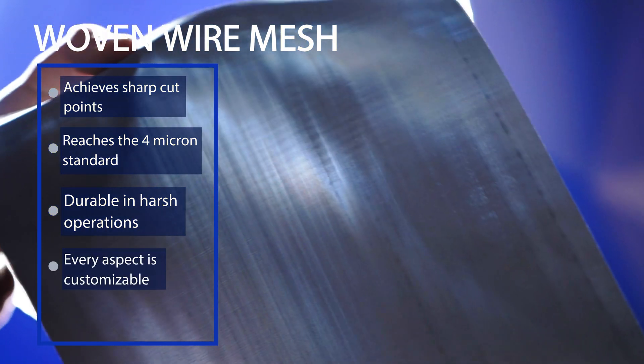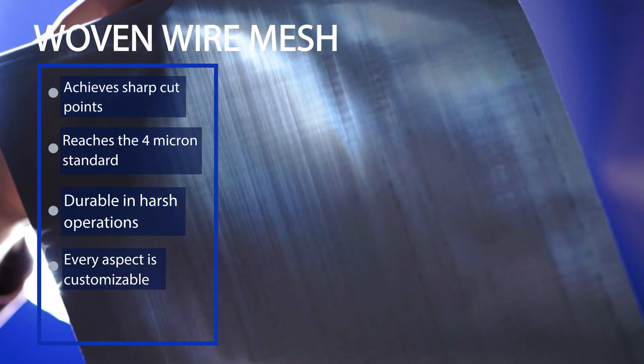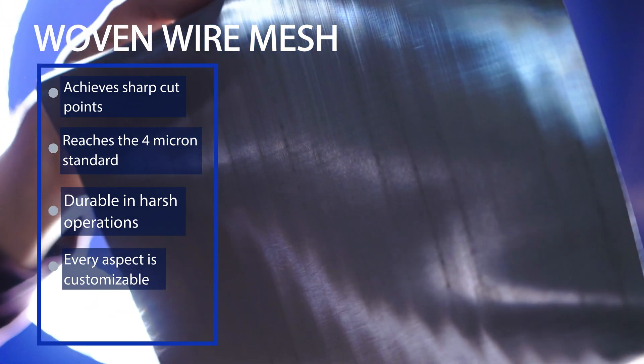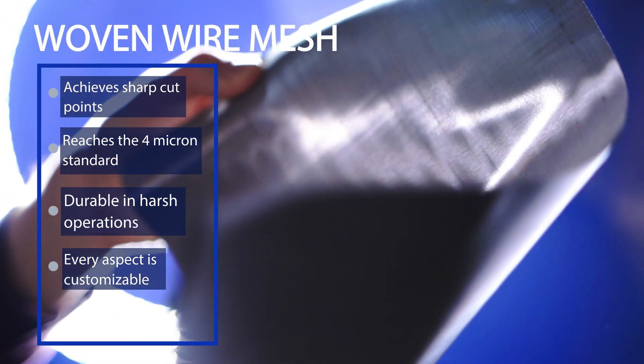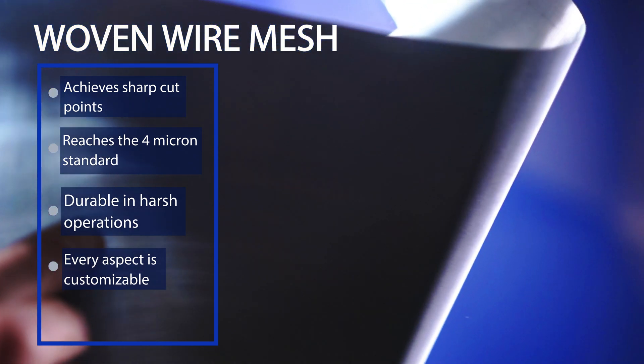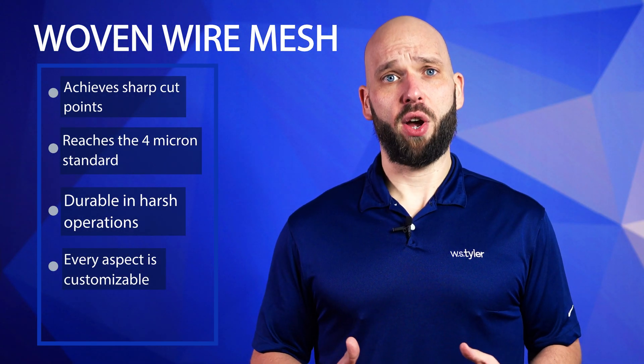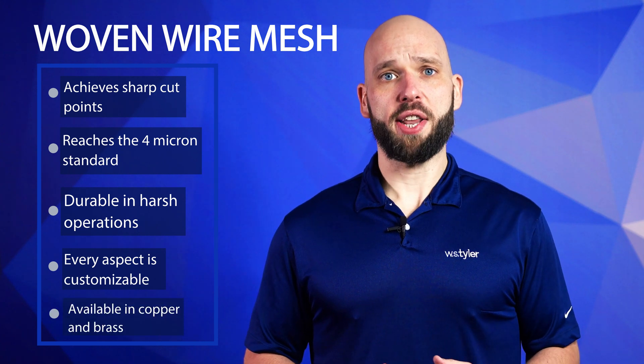Also because of how it's made the wire diameter, opening size, micron rating, weave pattern, width, and length are fully customizable. And finally if your operation calls for the use of alloys such as copper or brass, woven wire mesh is the only option available.